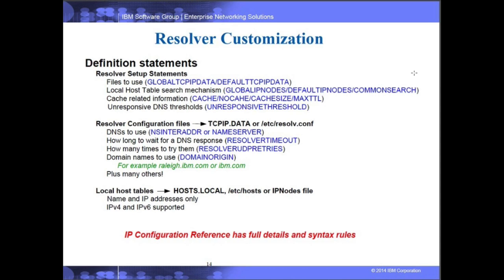Local host tables can be used either by themselves or in conjunction with DNS servers when names or IP addresses are not found in DNS. An application may request local files that are manually updated, residing either on the UNIX file system or in an MVS sequential file. These are flat files containing names and IP addresses, supporting both IPv6 and IPv4.